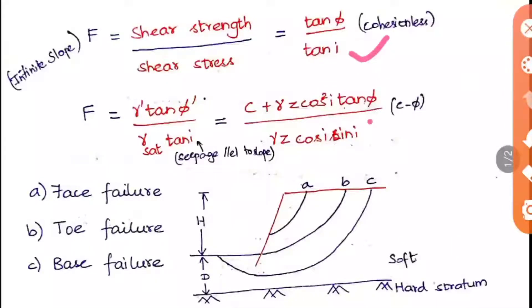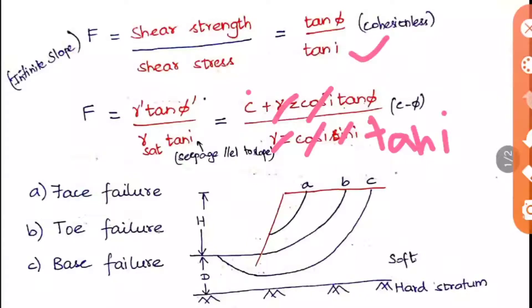In the general formula, if you substitute c = 0 — which applies for cohesionless soil where cohesion is zero — then γz cancels with γz, and cos²i divided by cos i simplifies. cos i over sin i remains, which equals tan i. So the formula reduces to tan φ / tan i, confirming that the cohesionless formula is derived directly from the general formula.